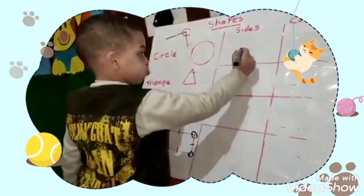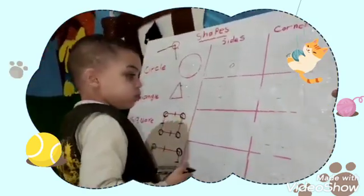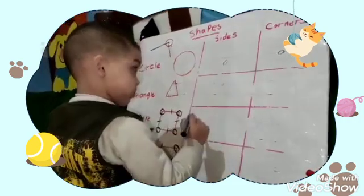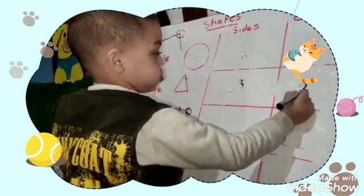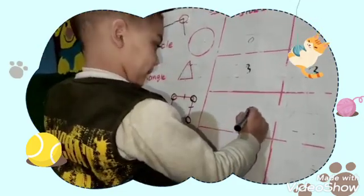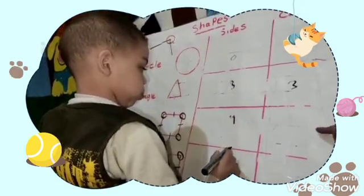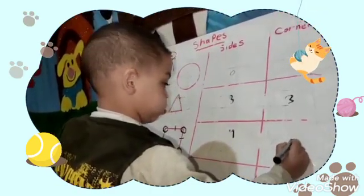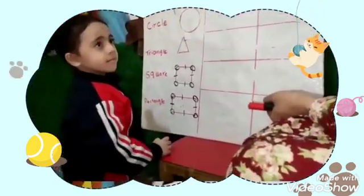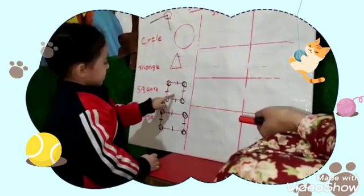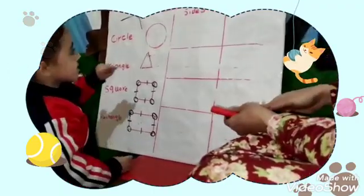How many sides for circle? How many corners for circle? Okay, how many sides for triangle? More excellent. How many corners? Square — how many sides? How many corners? More excellent. Clap your hands. How many sides for circle? Zero. Zero.